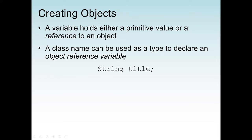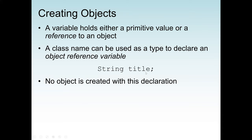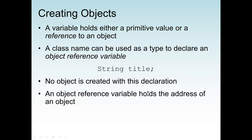A class name can be used as a type to declare an object reference variable. For example, String is a data type but it is a class. When we create a variable called title, it is not a primitive data type because its data type is a class — so it is an object. If we declare title as int, then it is a primitive type. At this point, no object is created — this is just a declaration. To create the object, we need to call what is called the constructor — a special method with the same name as the class that initializes the object.